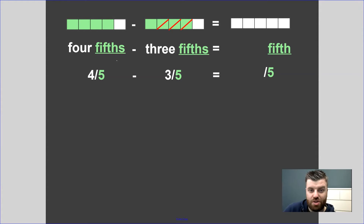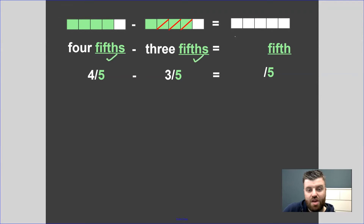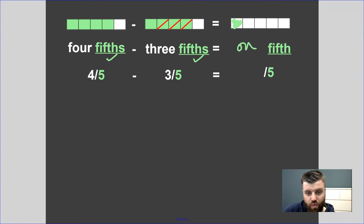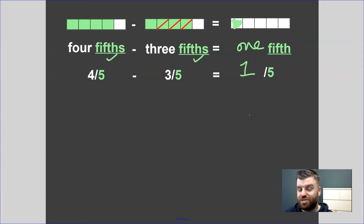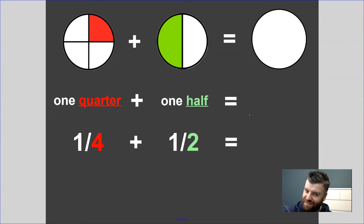It's the same for subtraction. If the denominators are already the same — as they are in this case with fifths — we can quite simply just look at the numerator and subtract the numbers. So four take away three is one, giving us one fifth. Really simple: if the denominators are already the same, just add or subtract the numerators.